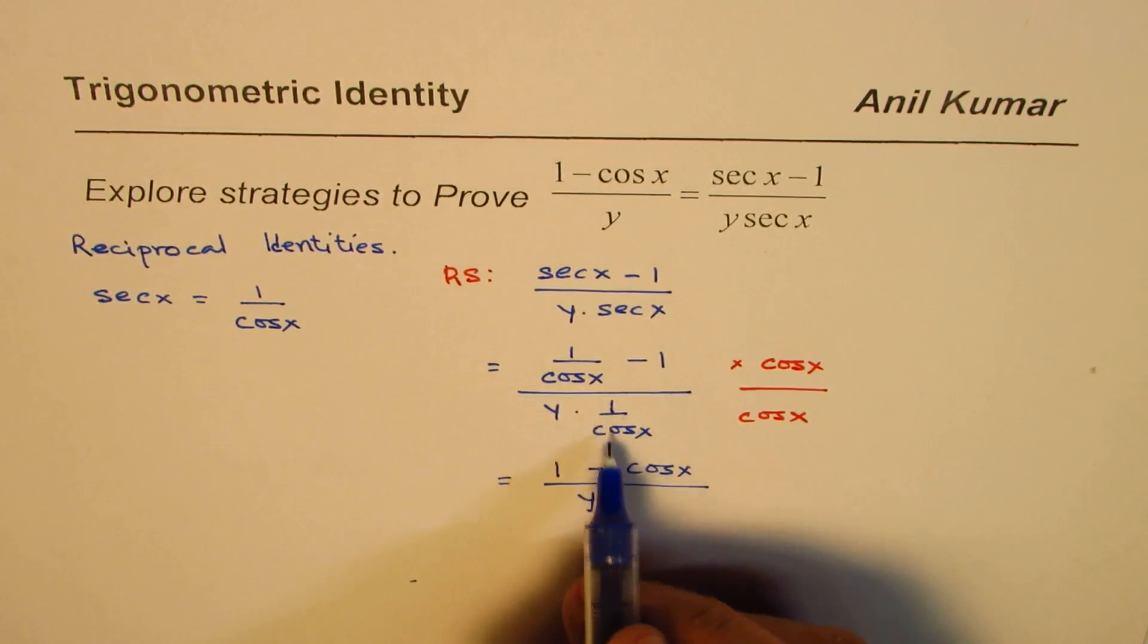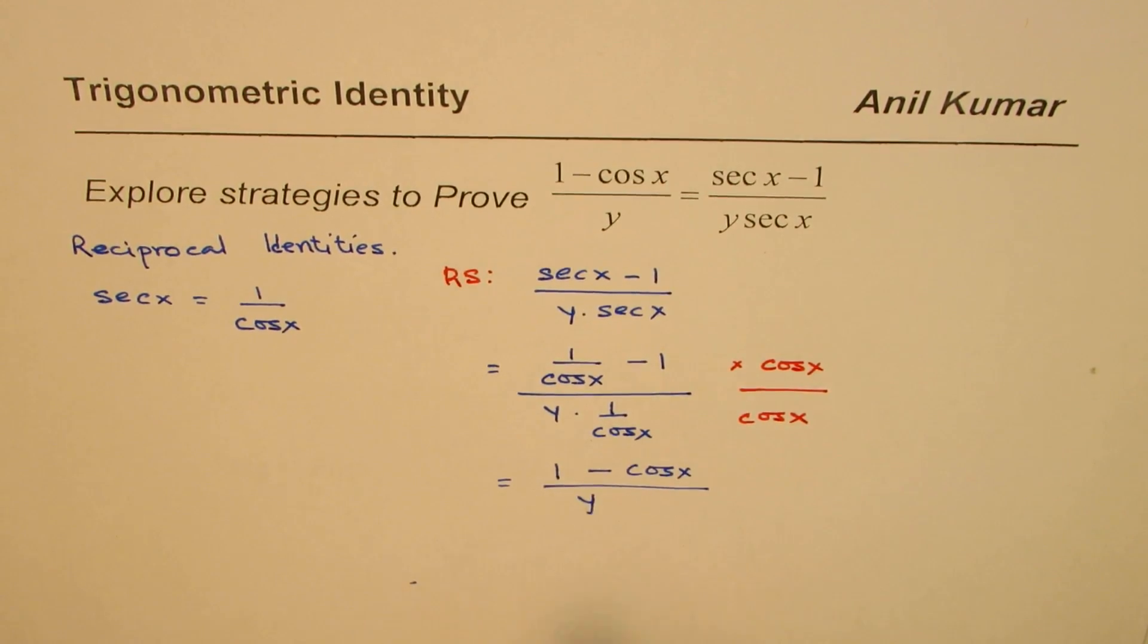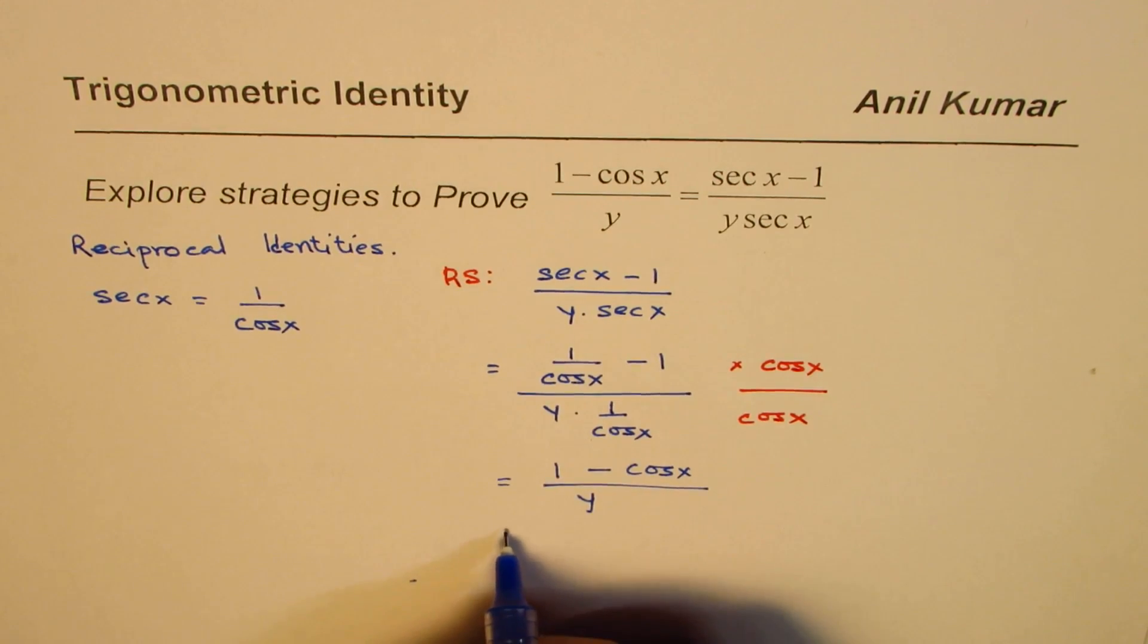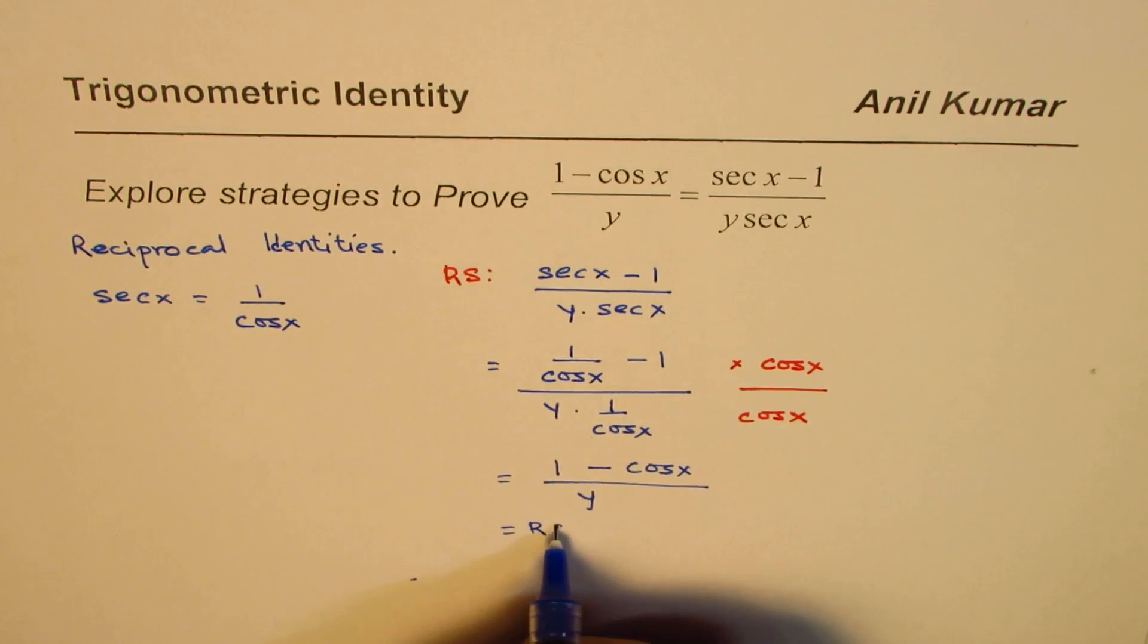They cancel out, so we get y. This is what we require, and that is the left-hand side in our case. So that is how very easily you can prove this particular identity.